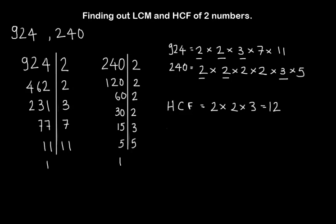Now LCM. LCM is the multiplication of common factors and the multiplication of its uncommon factors too. So first we write down the common factors 2 into 2 into 3, then multiply it by the uncommon factors of 924, which is 7 into 11, and then multiply it by the uncommon factors of 240, which is 2 into 2 into 5.